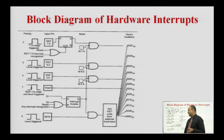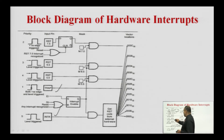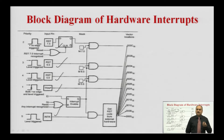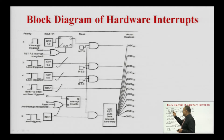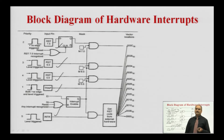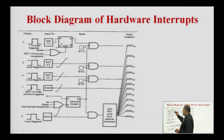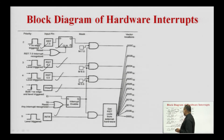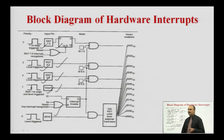This is the block diagram of hardware interrupts. We have 5 hardware interrupts: INTR, TRAP, RST4.5, RST5.5, RST6.5, and RST7.5. The pins receive the interrupt request signals from the interrupting device. These signals are edge-triggered or level-triggered. RST7.5 is a positive edge-triggered interrupt; RST6.5 is a level-triggered interrupt; RST5.5 is also a level-triggered interrupt. TRAP is both a positive edge and level-triggered interrupt. INTR is a level-triggered interrupt.